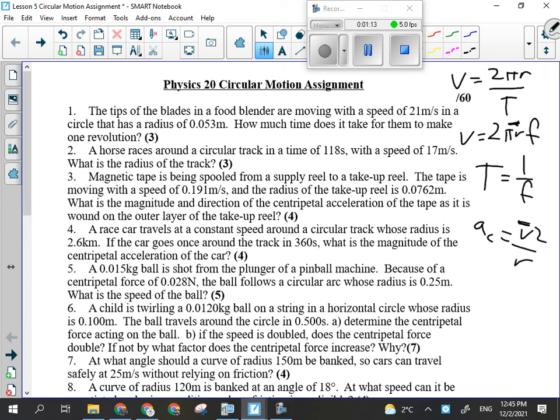You got the food blender spinning around really fast, 21 meters per second. The radius is 5.3 centimeters or 0.053 meters, and you're just looking for how much time it takes them to make one revolution. Really, all I'm asking for there is what period is.